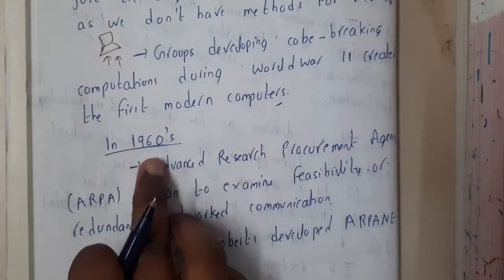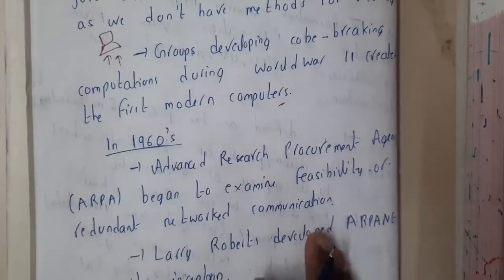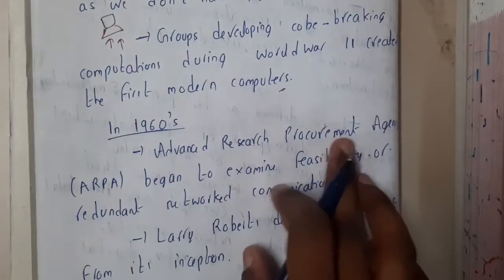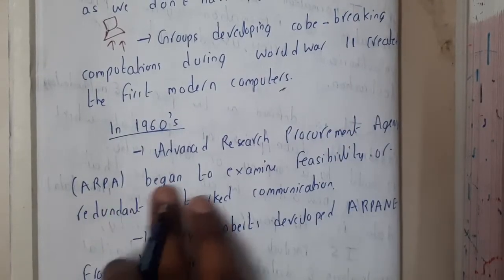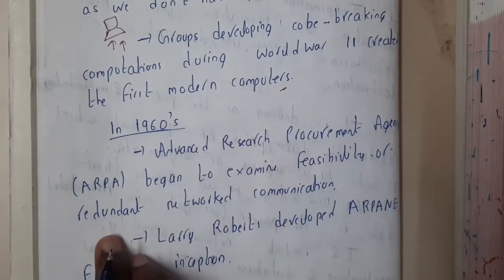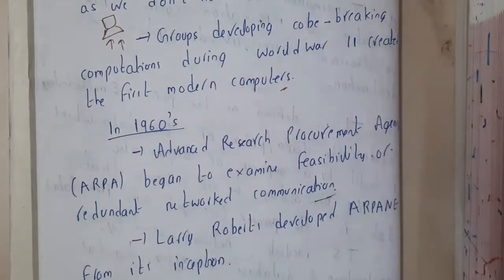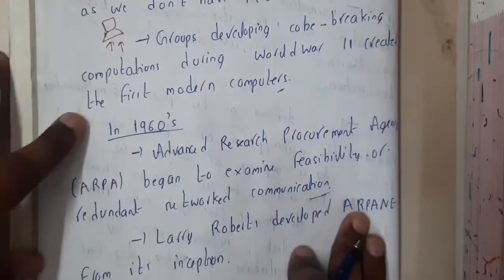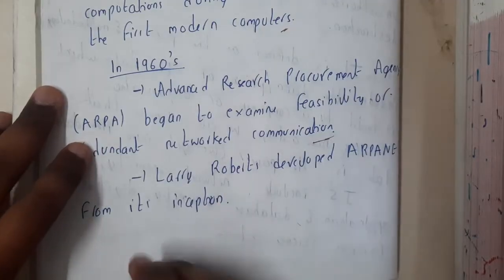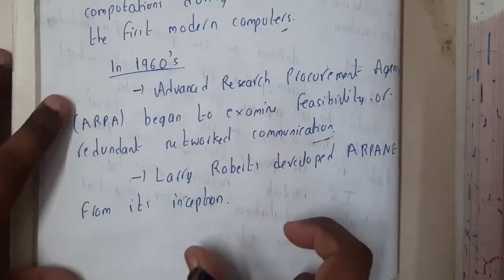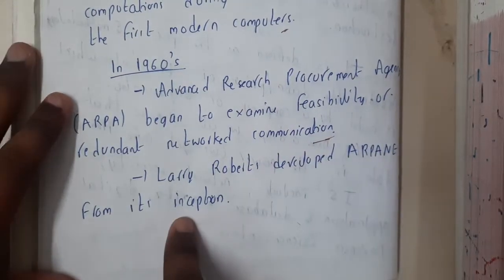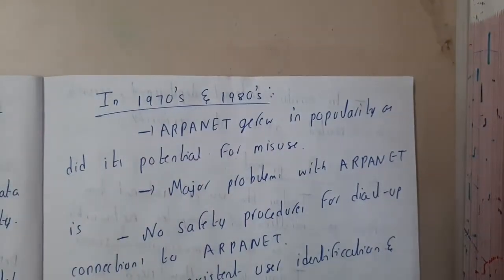In the 1960s, for the first time an agency called ARPA started. ARPA began to examine the feasibility of a redundant networked communication system. They started research into developing something to make the system secure. Finally, in the same 1960s, Larry Roberts developed a method called ARPANET for its inception.